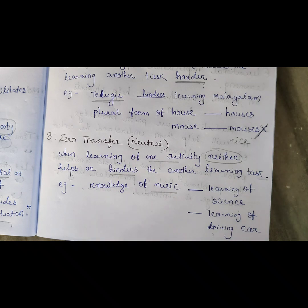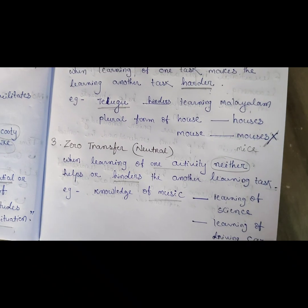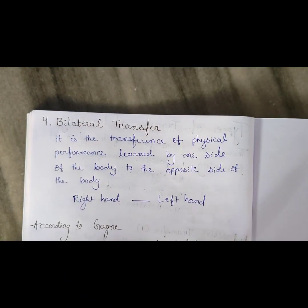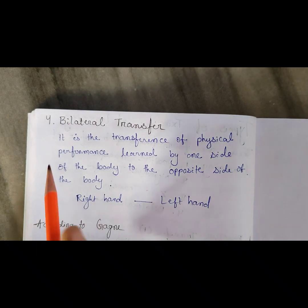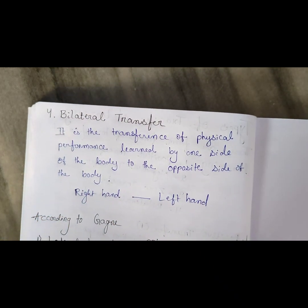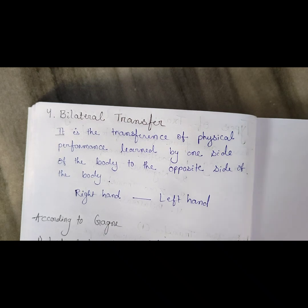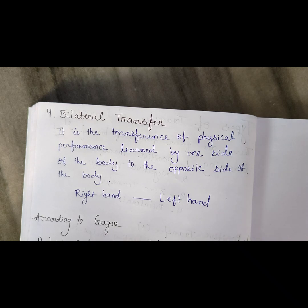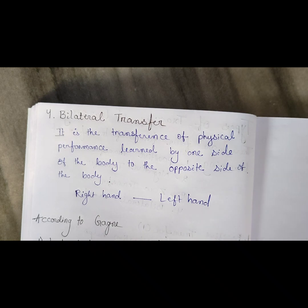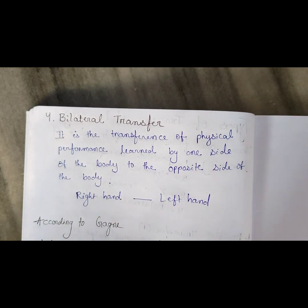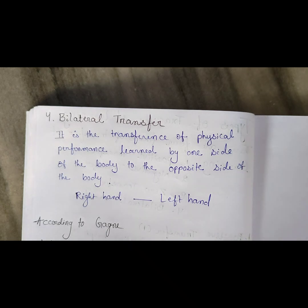So these are the three important types of transfer of learning: positive, negative, and neutral or zero transfer. One more type is bilateral transfer, which is not as important but still worth noting. It is the transfer of physical performance related to motor skills — physical performance learned by one side of the body transfers to the opposite side. For example, right hand to left hand, or right leg to left leg.